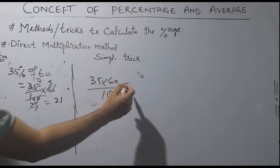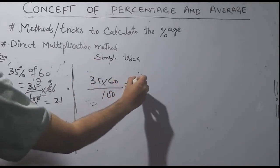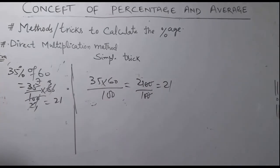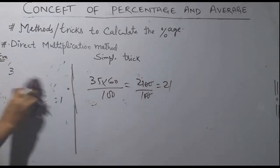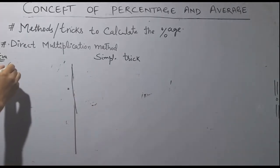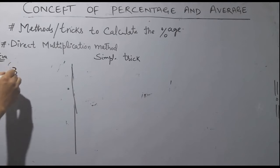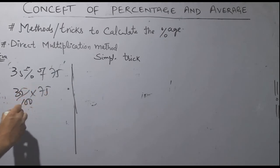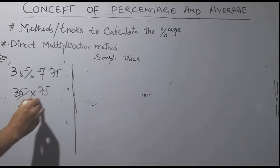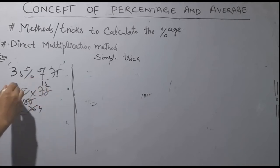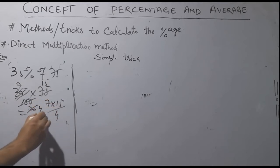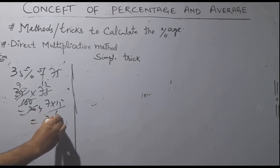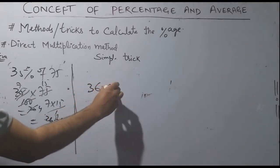You can also use 35 into 60 divided by 100, which gives 2100 divided by 100 = 21. For a case where there is no common factor — for example, 35% of 75 — use 35 divided by 100 into 75. That gives 35 × 75 = 2625, divided by 100, equals 26.25.